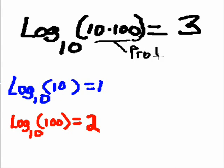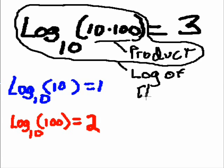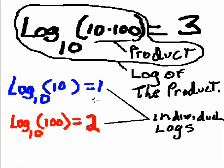So, this is a product. 10 times 100, that's a product. And this is the log of the product. This is the log of the product. Well, what about these guys? What are these guys? Here? Oh, that's too thin. Here and here. What are those guys? Well, those are the individual logs. Individual logs. And what's this then? This is the sum of the individual logs.